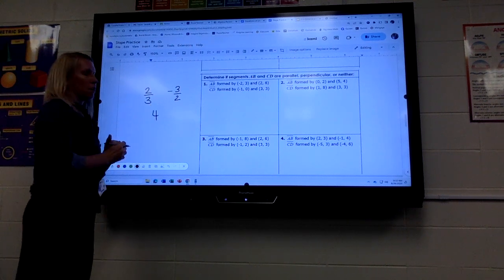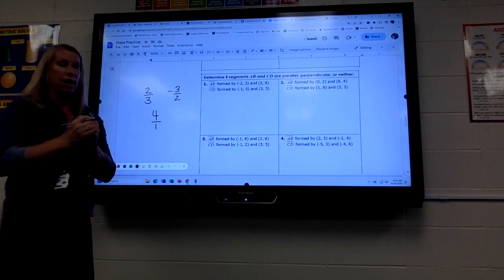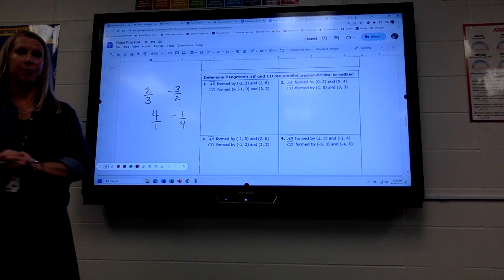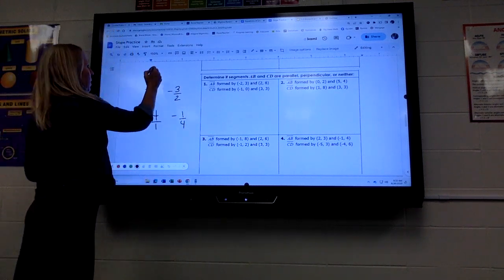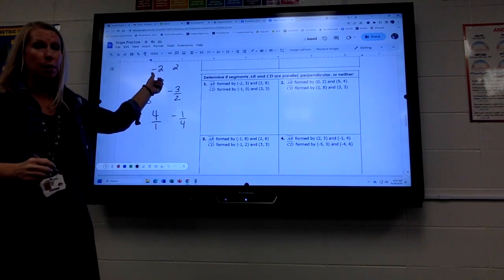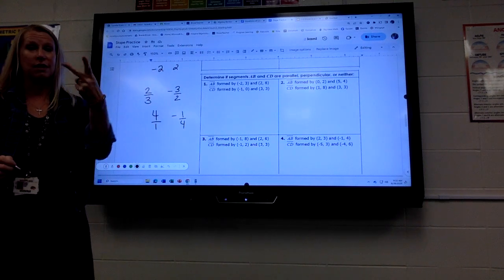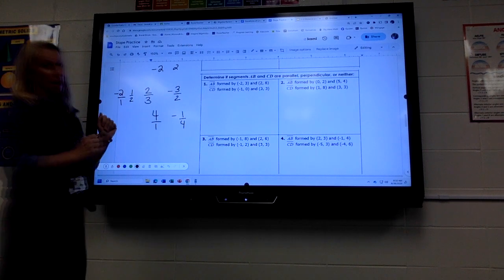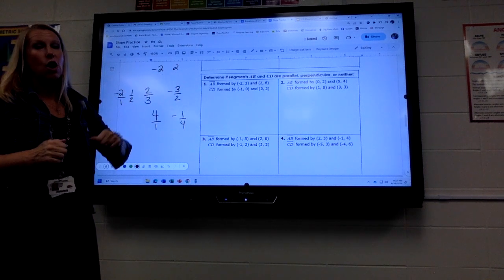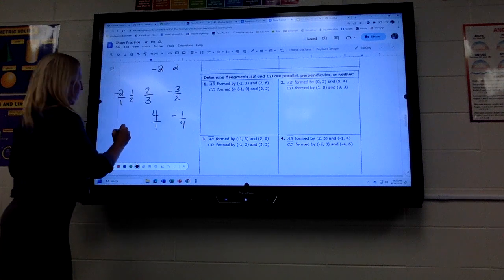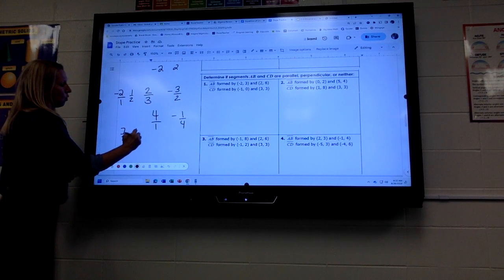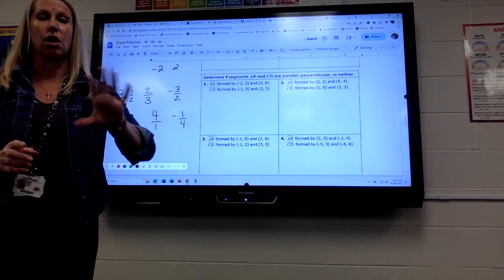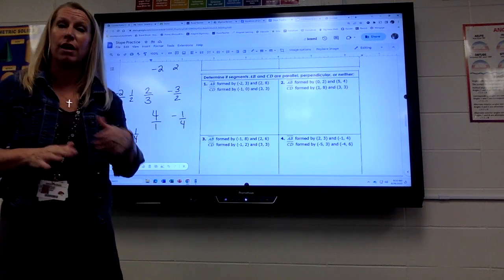If it's a whole number, like 4, 4 is the same as 4 over 1. So if I flip it upside down and change the sign, that would be perpendicular. Now some examples of neither would be like negative 2 and positive 2. Those are not perpendicular because one of them has to flip upside down. So negative 2 would have to be positive 1 half. So that would be a neither. Or if they just have nothing to do with each other, like 7 thirds and 1 fourth, that would be neither.